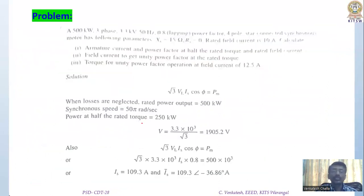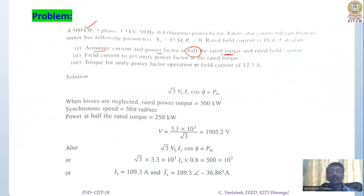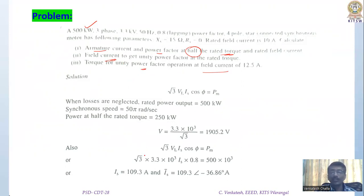Dear students, please go through this solved problem from the textbook. It asks you to find the armature current and power factor when the rated torque is given — the rated torque is P divided by omega_ms. You also need to find the field current for unity power factor at rated torque, and the field current at 12.5 m/s. Please go through this problem, and if there are any doubts you can comment to us.